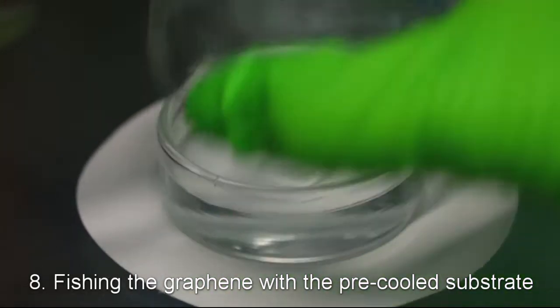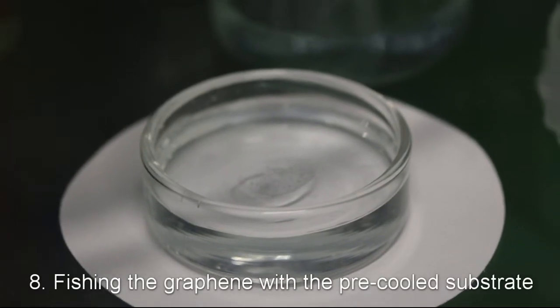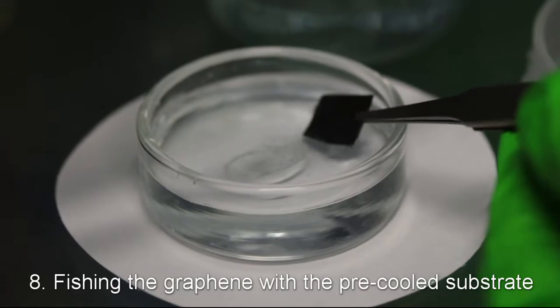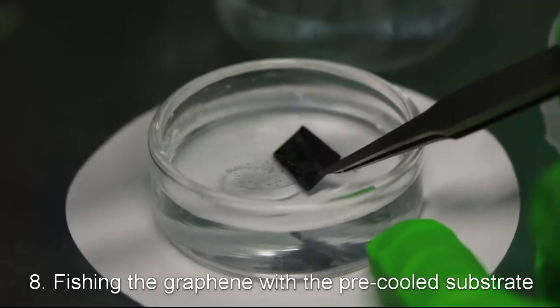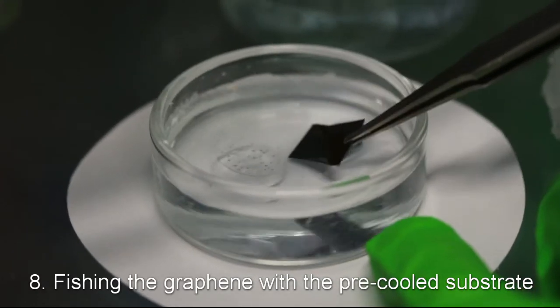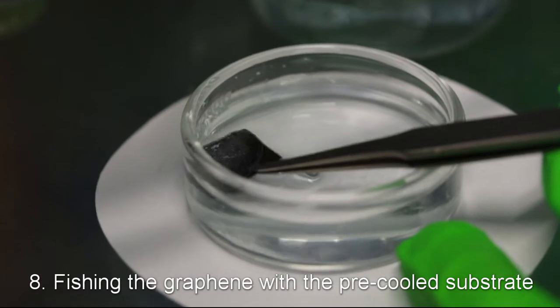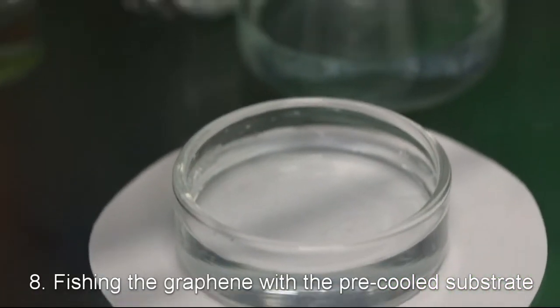And then we do the transfer. We take the substrate, in our case it's a silicon wafer, and the tweezers that were preliminarily cooled down and fish the graphene with cyclohexane from the bottom. This step can be done in many different manners, but we found this one the simplest and suitable for most substrate types.